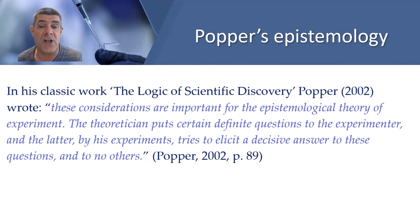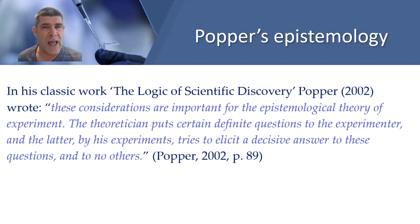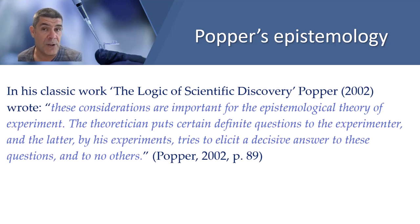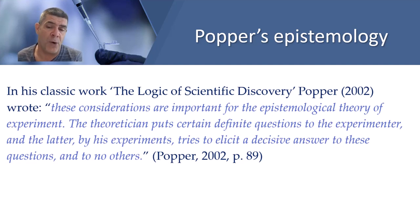Hypotheses are linked to the scientific method, or probably more correctly, to the scientific purpose or practice. We still haven't really tied down what a scientific method actually is. These ideas harken back to the nature of scientific knowledge and hence have that epistemological perspective. In his classic work 'The Logic of Scientific Discovery,' Popper wrote: 'These considerations are important for the epistemological theory of experiment. The theoretician puts certain definite questions to the experimenter, and the latter, by his experiments, tries to elicit a decisive answer to these questions, and to no others.'